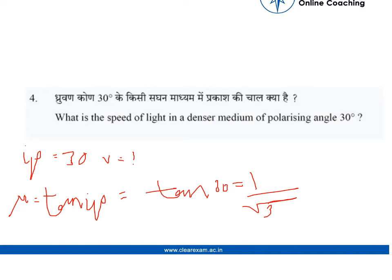We know that μ equals c by v, where c is the speed of light. By this relation, we can find v equals c times root 3.